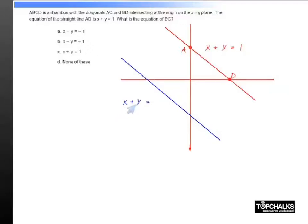...that the diagonals are intersecting at the origin, which means it must be symmetric about the origin. You will find that if this expression is X + Y = 1, this must necessarily be X + Y = -1.